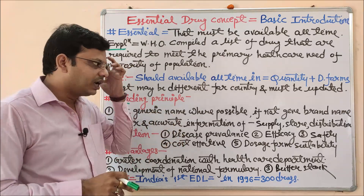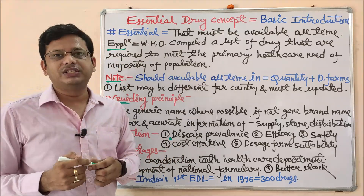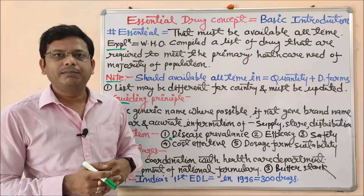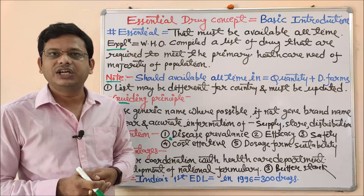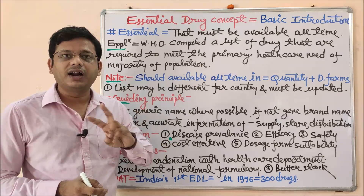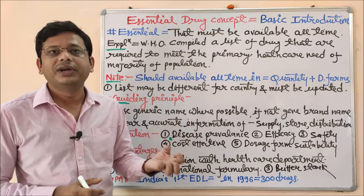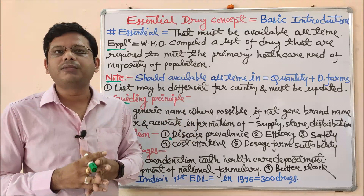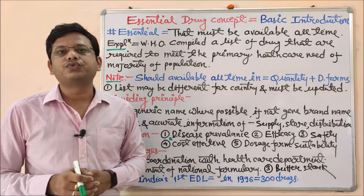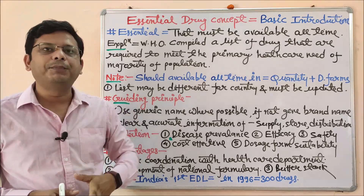Cost-effectiveness is also a major consideration. For example, a generic paracetamol strip may cost 2 rupees, while a branded tablet costs 20 rupees per strip. States will obviously consider the 2-rupee option if efficacy and effect are not variable. The economical option should be selected; otherwise, too much money would be spent buying few strips. Next: dosage form suitability — which dosage form is suitable for that particular state depends on which population is in the maximum number: children, adults, or geriatric persons.